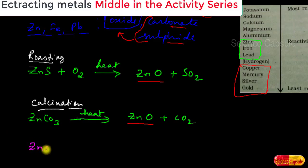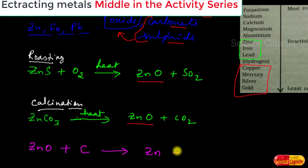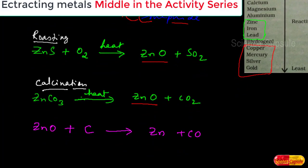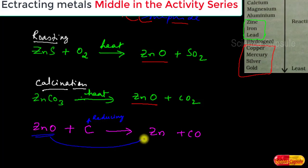Once the ores are converted to oxide ore, they can be easily reduced. For example, zinc oxide with a suitable reducing agent such as carbon is reduced to zinc metal and carbon monoxide. Here carbon acts as the reducing agent, reducing zinc oxide to zinc metal.